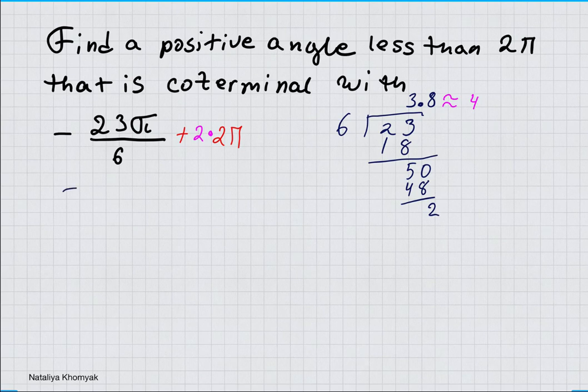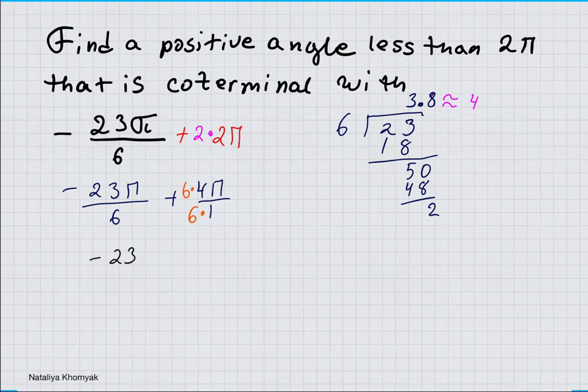So now we have negative 23π/6 plus 4π, and we are adding fractions, so it's out of 1. We need a common denominator, which would be 6, so 1 multiplied by 6. Whatever you do to the denominator, you want to do the same thing to the numerator. Now we have negative 23π plus 24π out of 6.